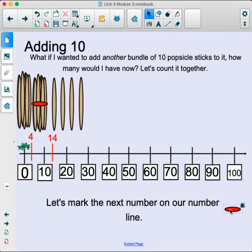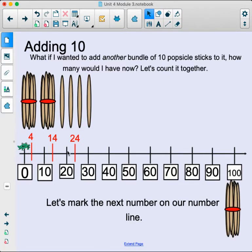So if we added another bundle to it. Oh, my little tiny bundle got left behind. Here we go. So if we added another bundle, how many would we have now? If you thought the answer was 24, you are right. So we have 2 bundles of 10. 2 bundles of 10. That's 20. And we have 4 single popsicle sticks to make our number 24.